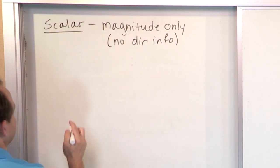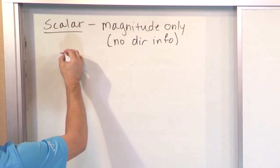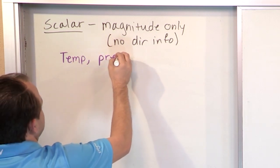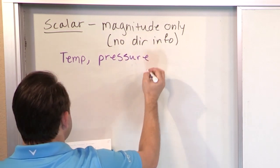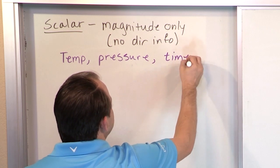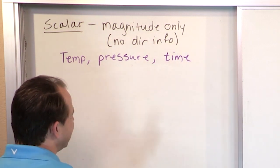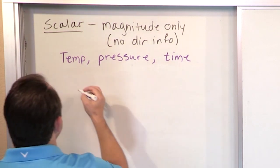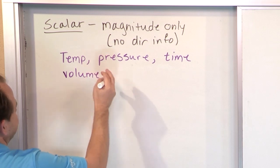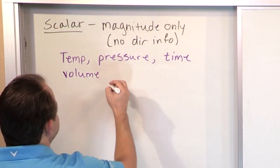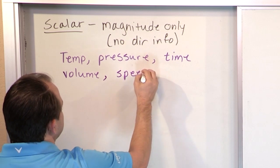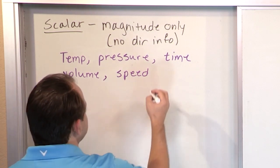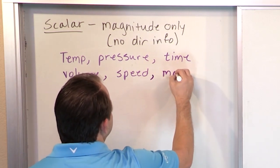Some examples of scalars would be something like temperature, pressure like air pressure, time — even though we say time flows, if you think about a moment of time there's no direction to it, that moment is time equals something, so that's a scalar. Volume of a gas, like 34 cubic meters. Speed tells you how fast you're going, meters per second, but it doesn't give any direction information, so it's a scalar. And mass, mass of an object.